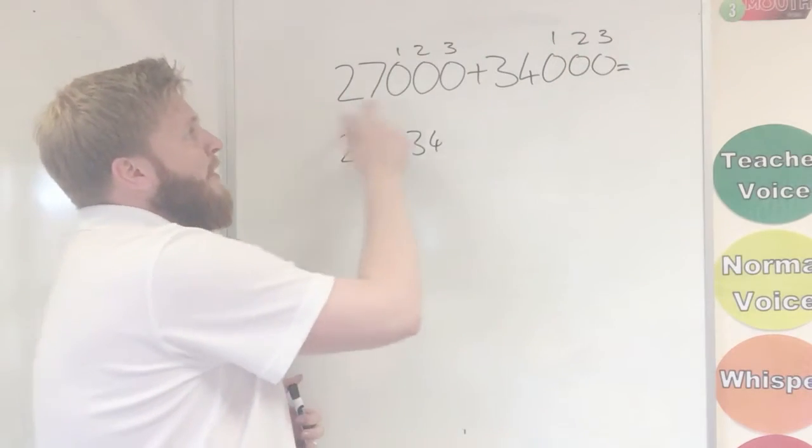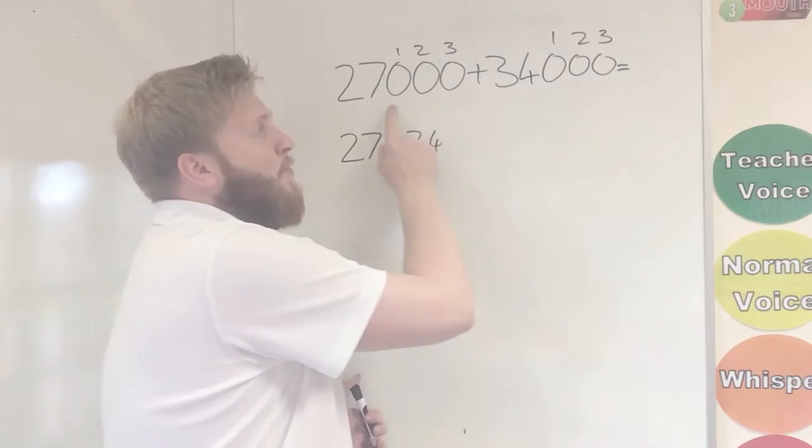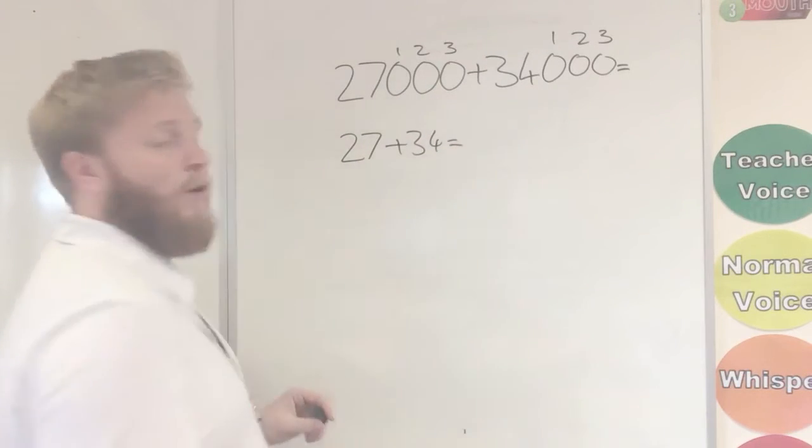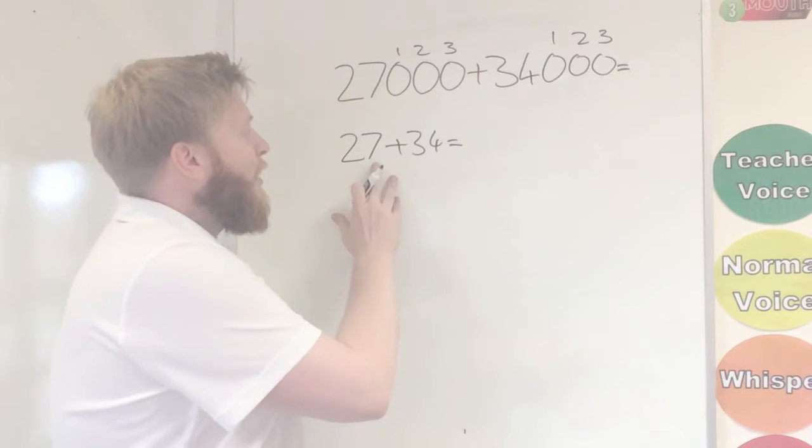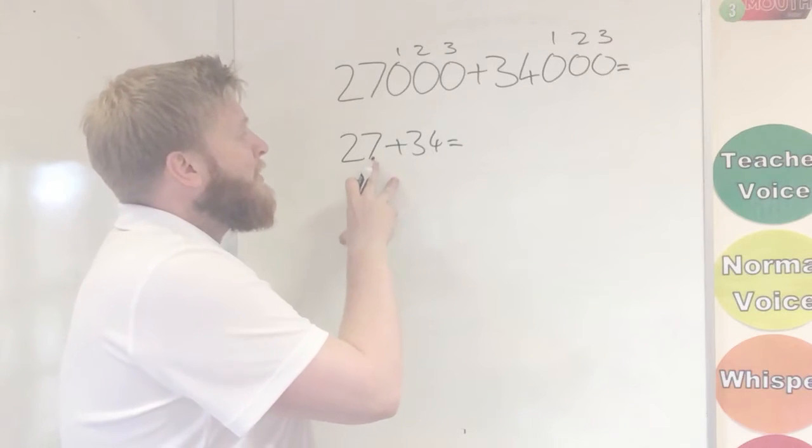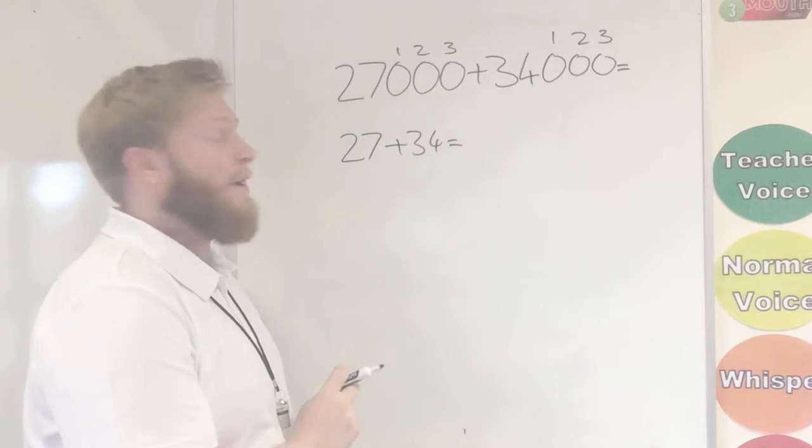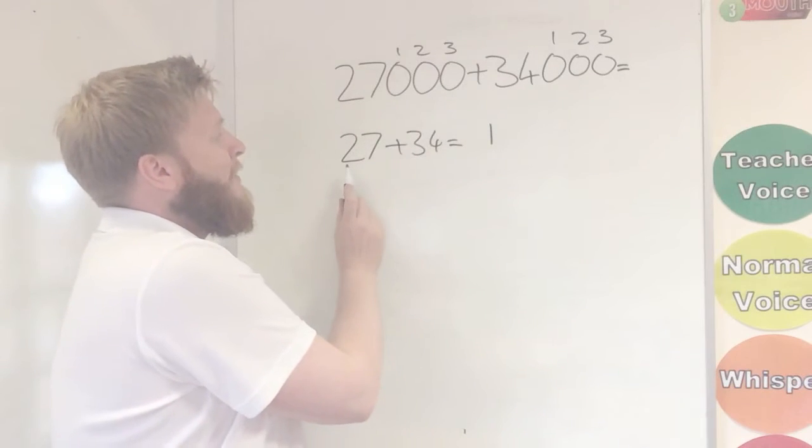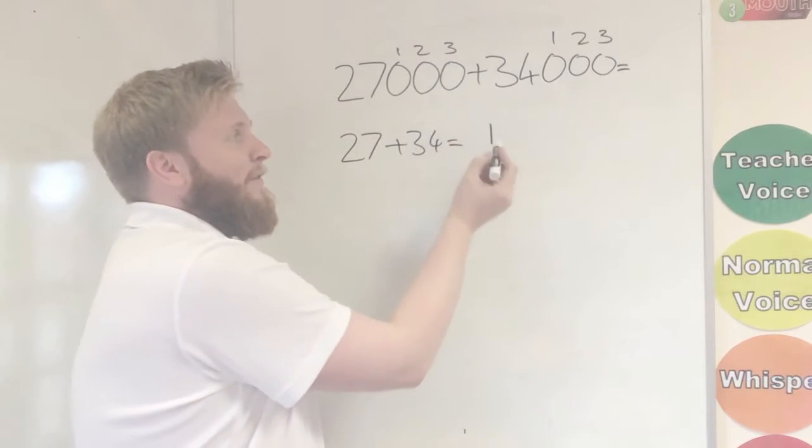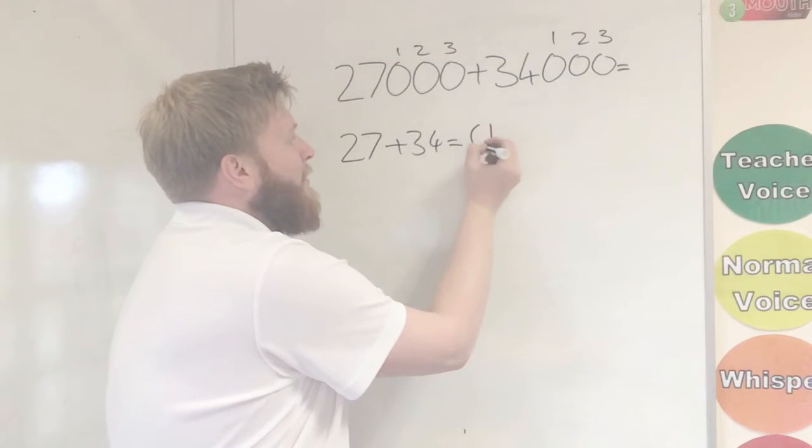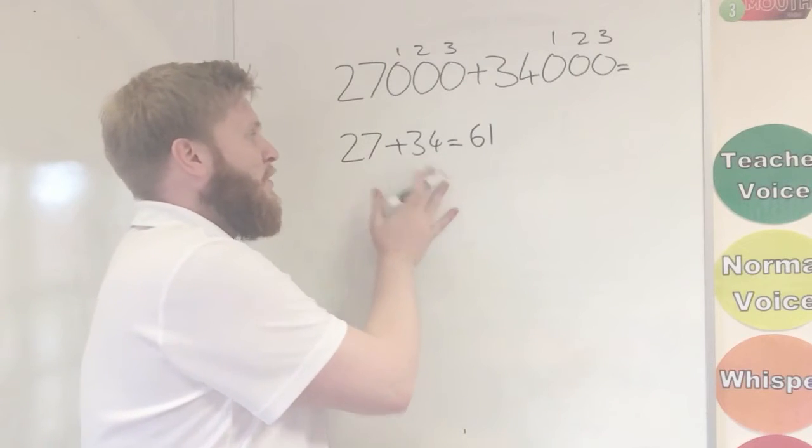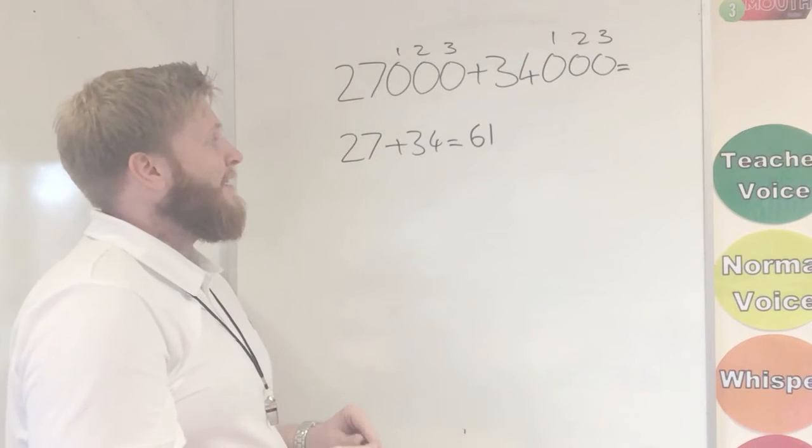So what I'm going to do, 27 plus 34, rather than 27,000 plus 34,000, it's made our numbers smaller. So in my head, because I know number bonds, my 7 plus 4 is going to be 11. So that's 1, and I know my 1's coming over. And 2 plus 3 is 5, but because I have 11, I've got another 1, my answer is going to be 61. So now I've got my answer for 27 plus 34, and I've got my answer as 61.